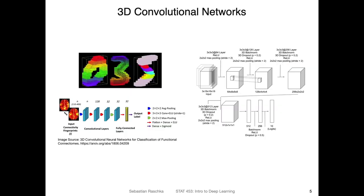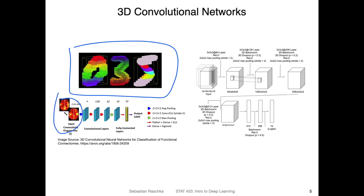Another project involved working with 3D convolutional networks. This is a 3D version of the MNIST dataset, which you will be seeing a lot in this class in the introductory lectures, because it's a simple dataset to get started with neural networks. In this project, the students worked with fMRI — magnetic resonance imaging data, like brain scans — and classified different types of brain scans.